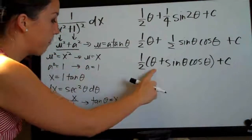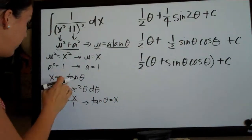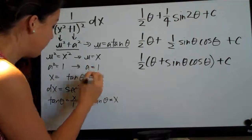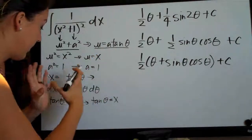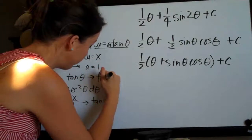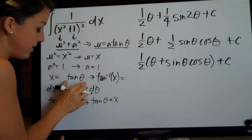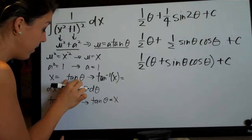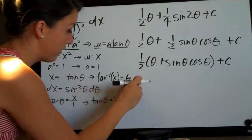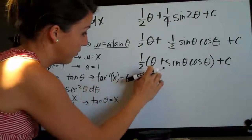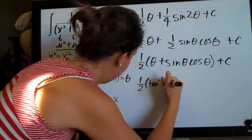We need to solve for theta. Going back to the formula tangent of theta equals x, we raise both sides to tangent to the negative one — that is, we apply arctan to both sides. The tangent inverse and tangent cancel, leaving just theta. So theta equals tangent to the negative one of x, and we can plug arctan(x) in for theta, giving us one half times tangent to the negative one of x.